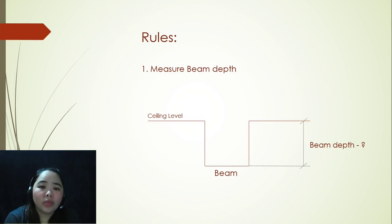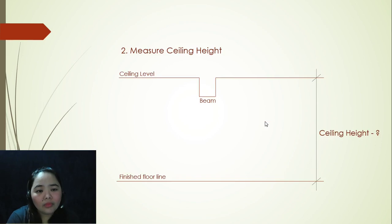Number one, we are going to talk about measure beam depth. What does it mean? We need to get the beam depth from the bottom of the beam up to the ceiling underside. Number two, we need to measure the ceiling height. When we say ceiling height, that is the distance between the finished floor line and the ceiling underside.